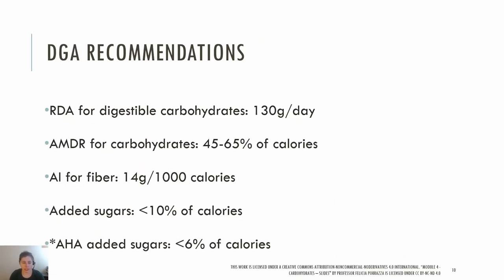Let's review carbohydrate recommendations. The Dietary Guidelines for Americans 2020–2025 suggest 45–65% of calories from carbohydrates, 130 grams of digestible carbohydrates for the RDA, 14 grams per 1,000 calories of dietary fiber, and no more than 10% of calories from added sugars per day. The emphasis is on whole, minimally processed foods like fruits, vegetables, and whole grains. Added sugars include those added during food manufacturing and do not include naturally occurring sugars.